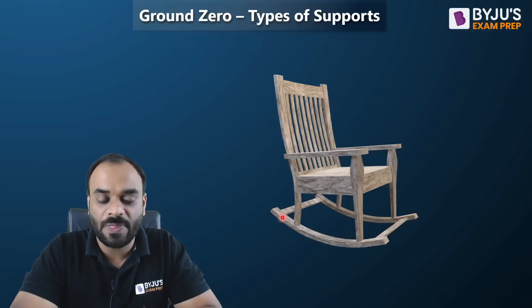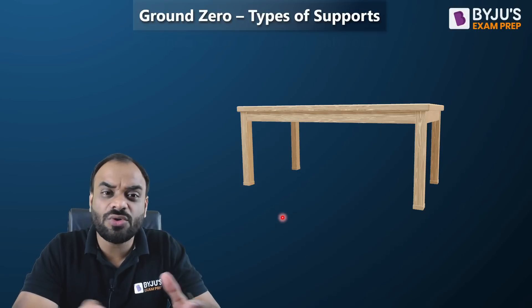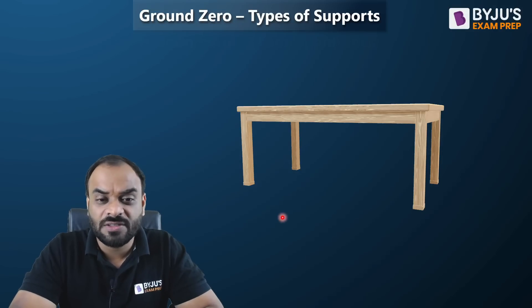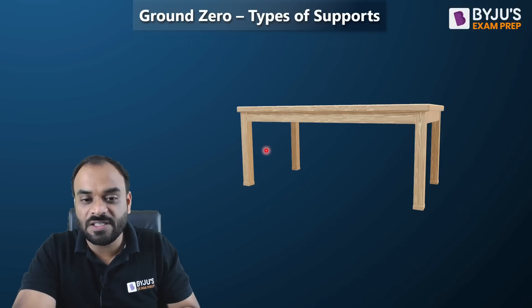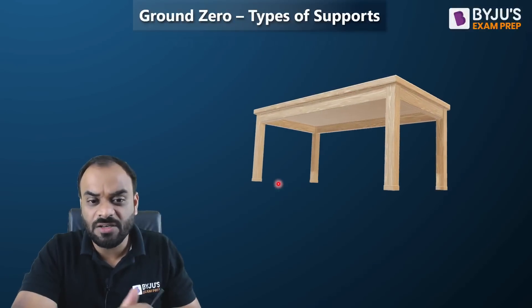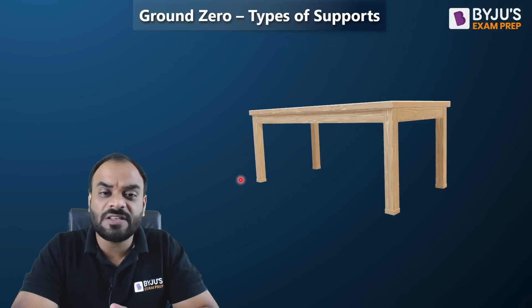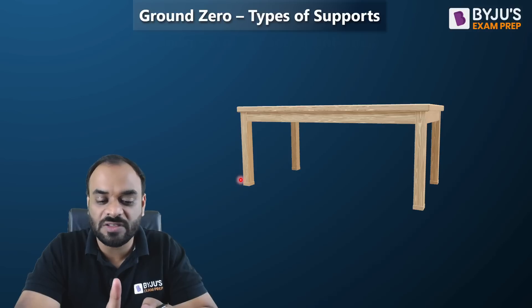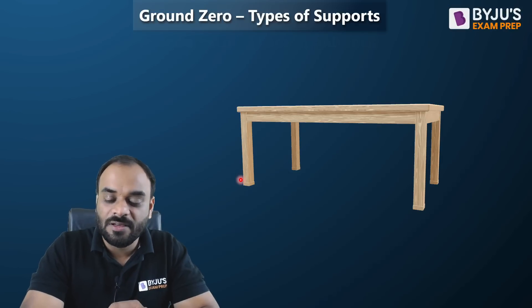The free end on a smooth surface can be understood by looking at furniture like a table. The table's vertical legs rest on the floor and develop one vertical reaction at each free end, transferring load through those contact points. So rocker, roller, and free end on a smooth surface all have only one reaction, though under different conditions.